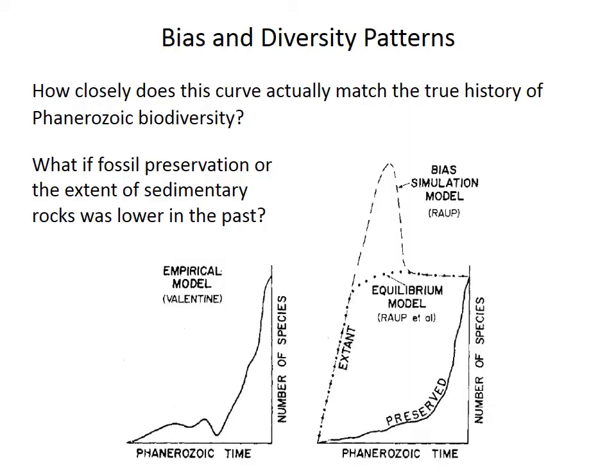Those questions can only be answered if the diversity pattern actually reflects the true history of diversity. This was a big worry even back in the 70s. Maybe fossil preservation was lower in the past. There are also more exposures of younger sedimentary rocks, so people wondered if diversity actually reached its present-day value pretty early — this equilibrium model curve of Raup — and maybe the fossil record just results from various preservation biases instead.